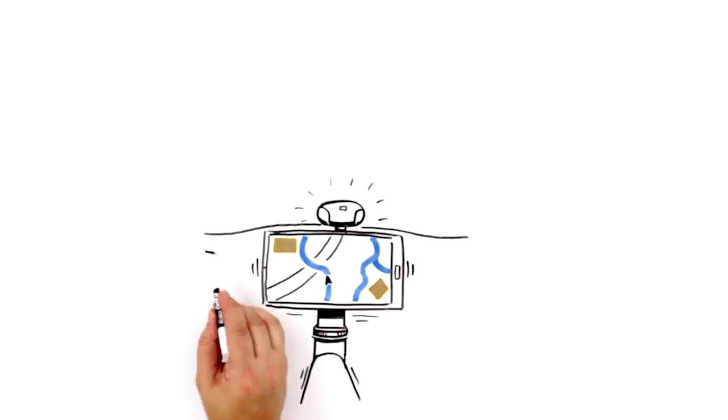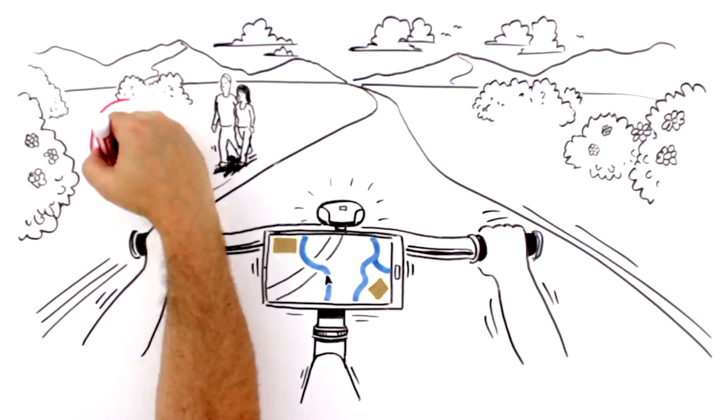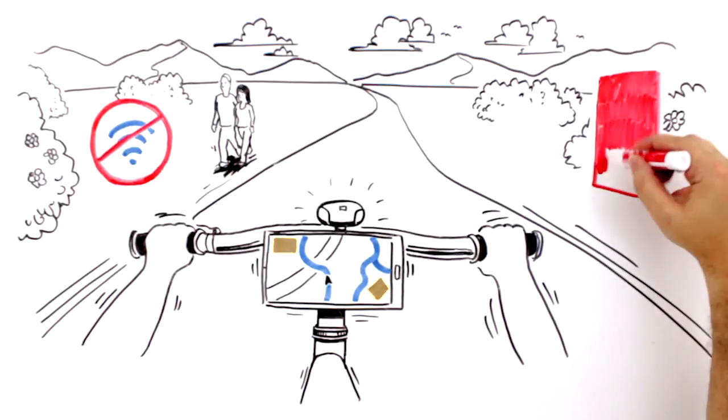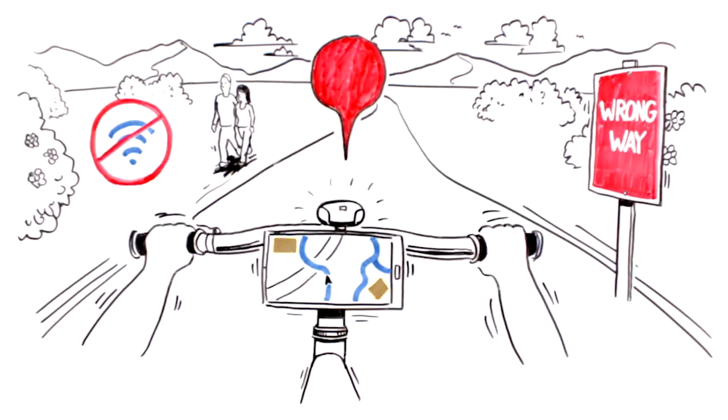Sheena finds her way with a map app on her phone attached to her bike handle. It's been great, except on the day she lost her signal, or the one where it took her the wrong way down a one-way street, or the afternoon it took her to the wrong place.